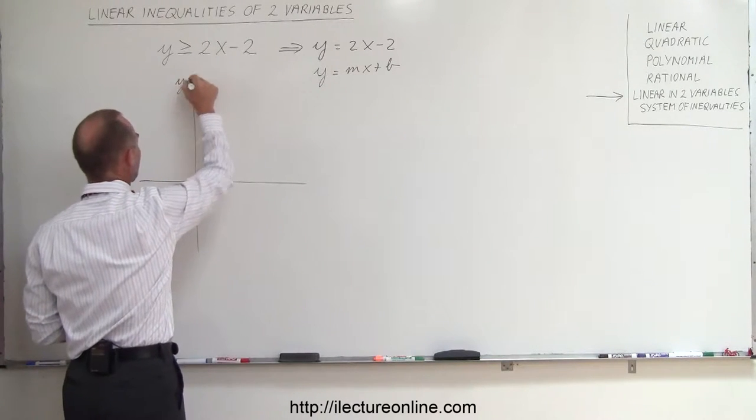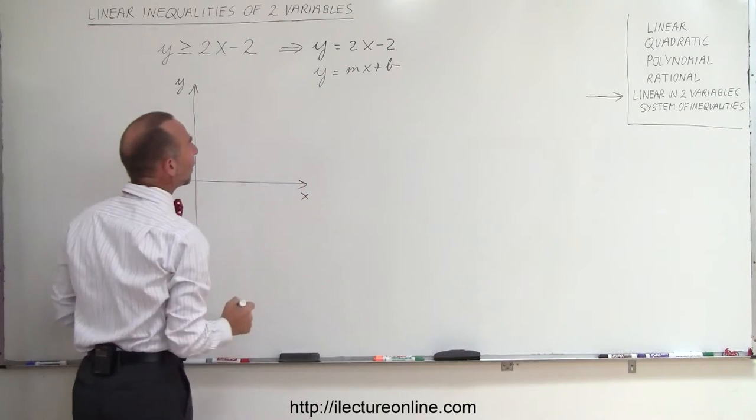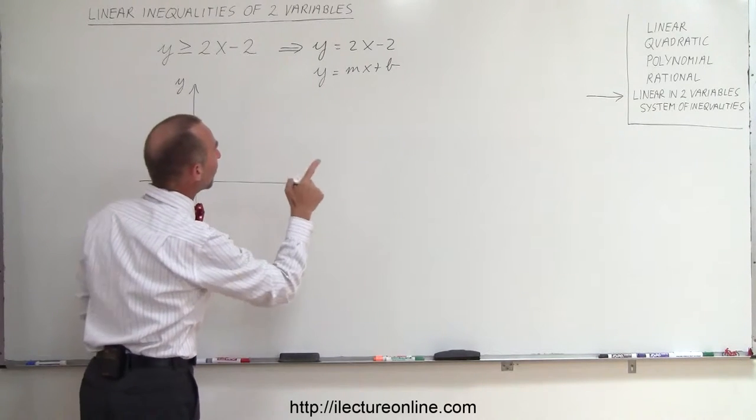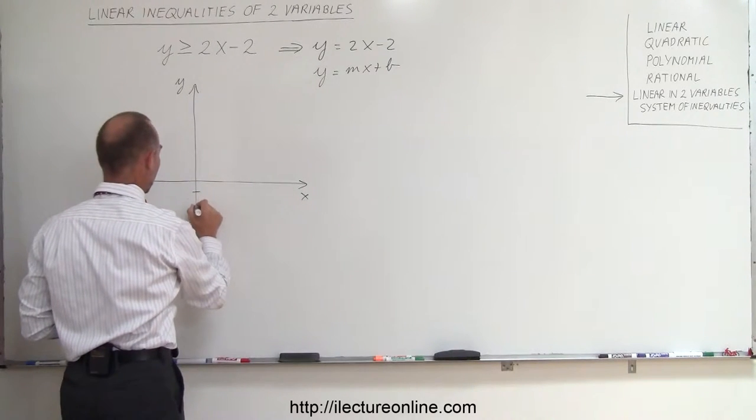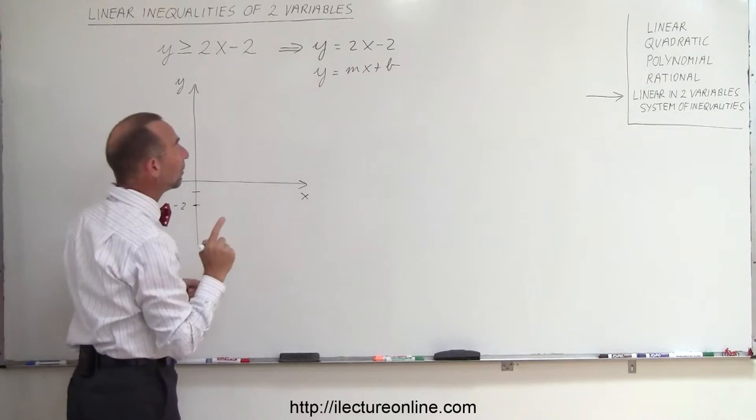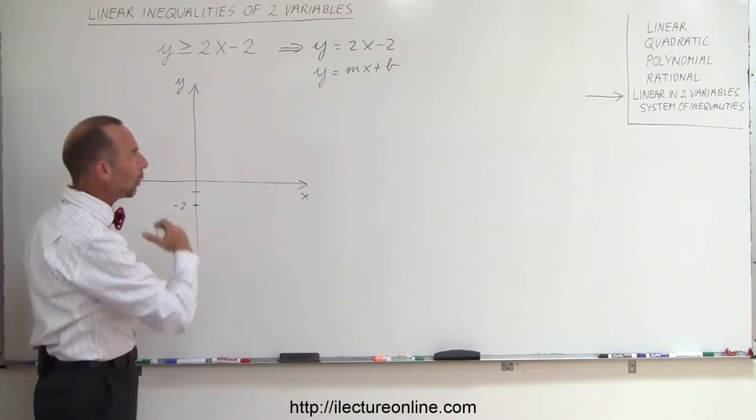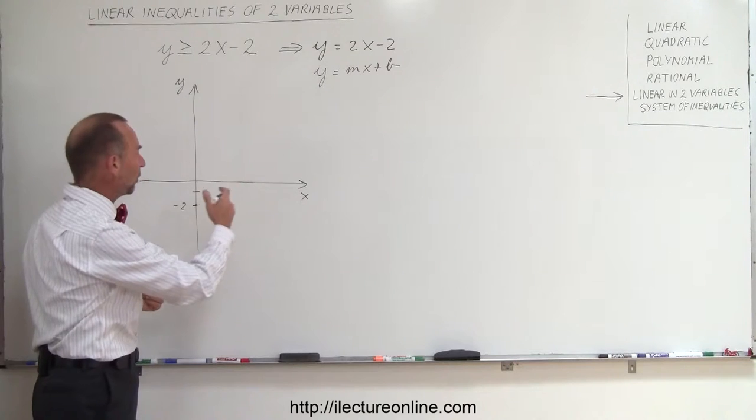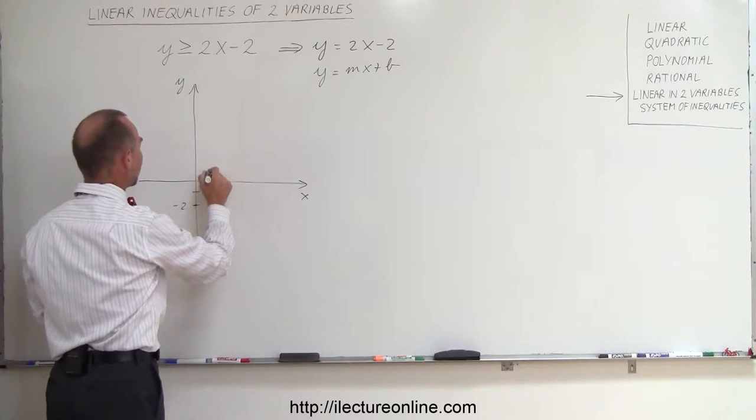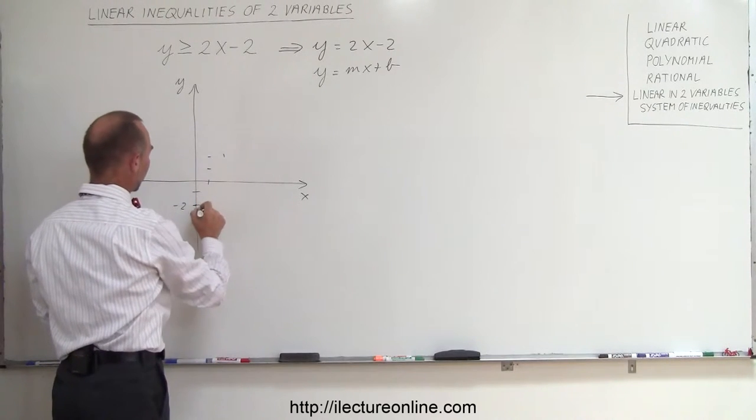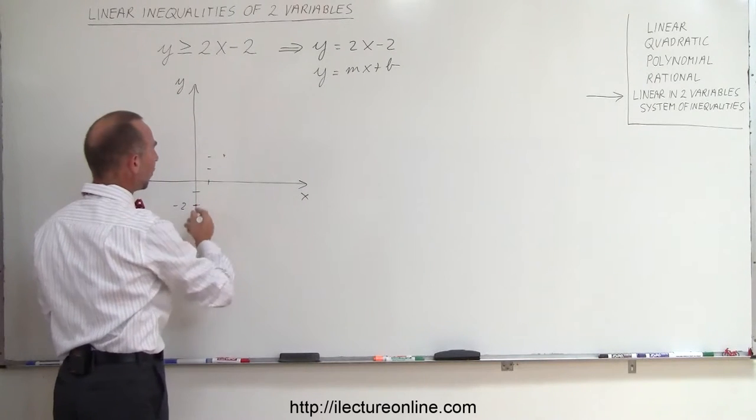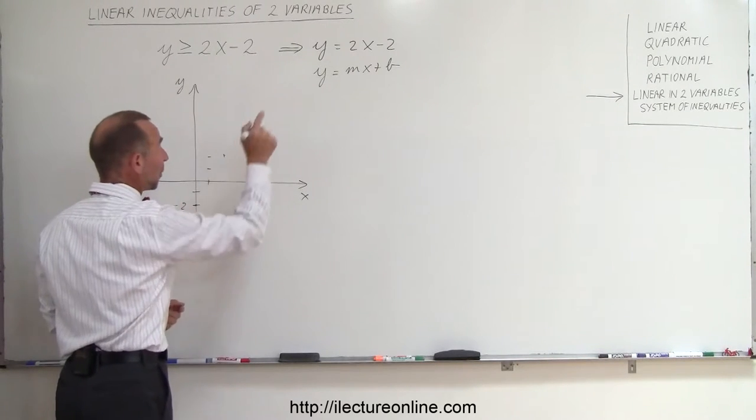In this case, let me draw the y here, and here we have the x. We know that the intercept is at minus 2, so minus 1, minus 2. The intercept is right there, and the slope is 2. That means it rises 2 and runs 1. You go up 2 and over 1, up 2 and over 1, and so forth. If you connect these dots, that is the line that represents that equation.